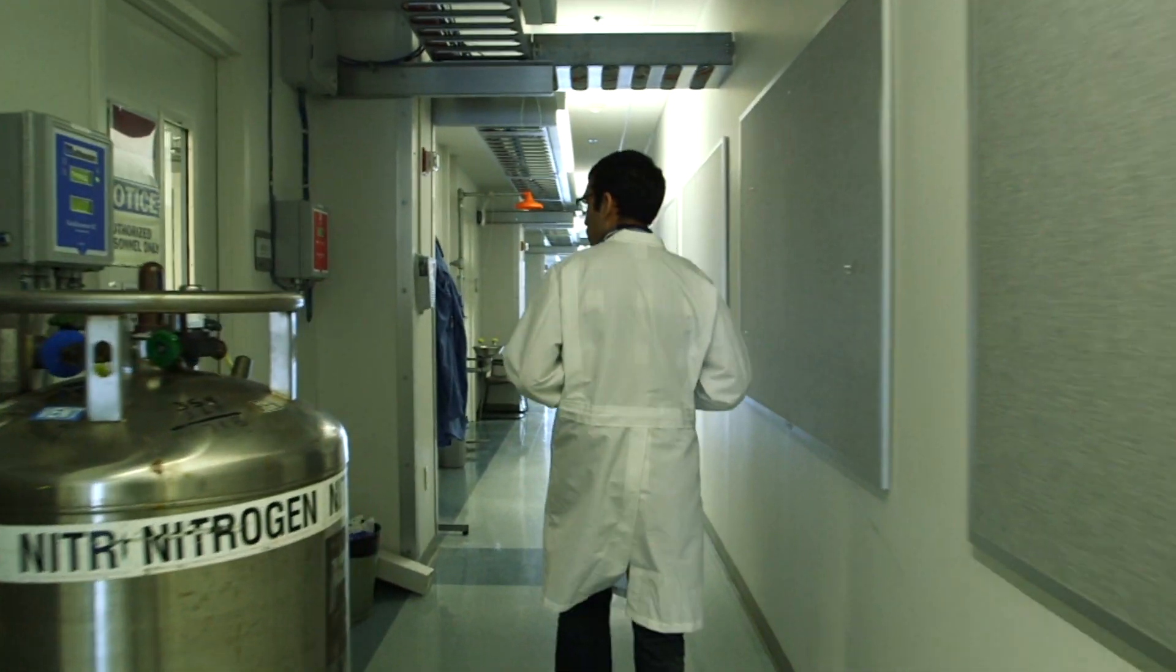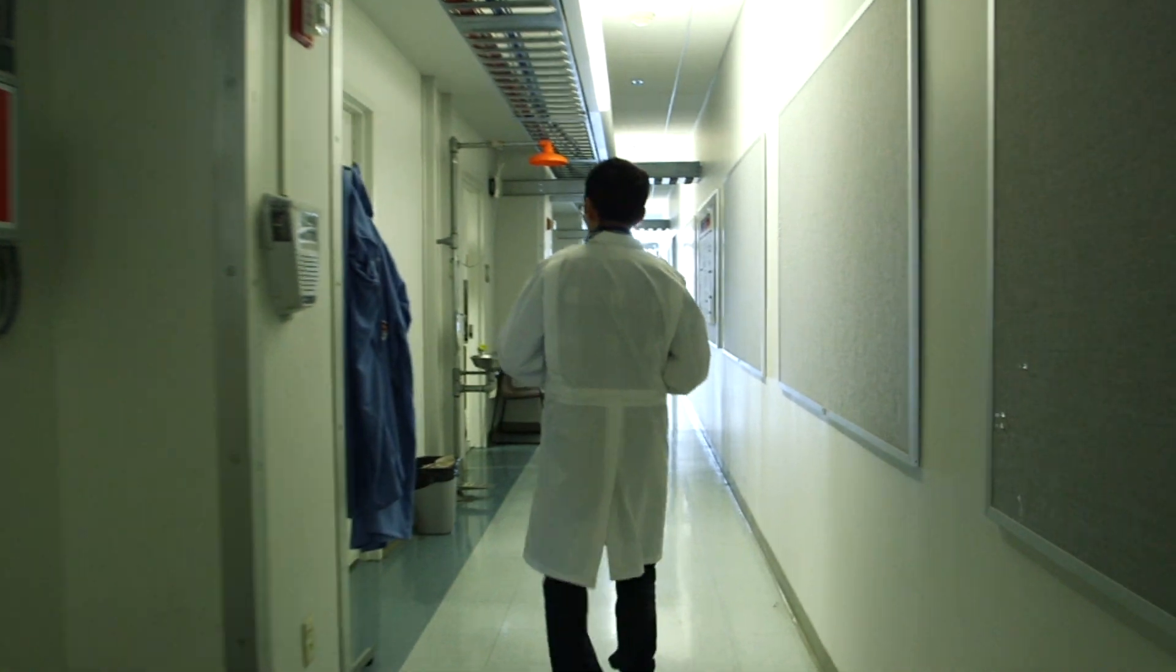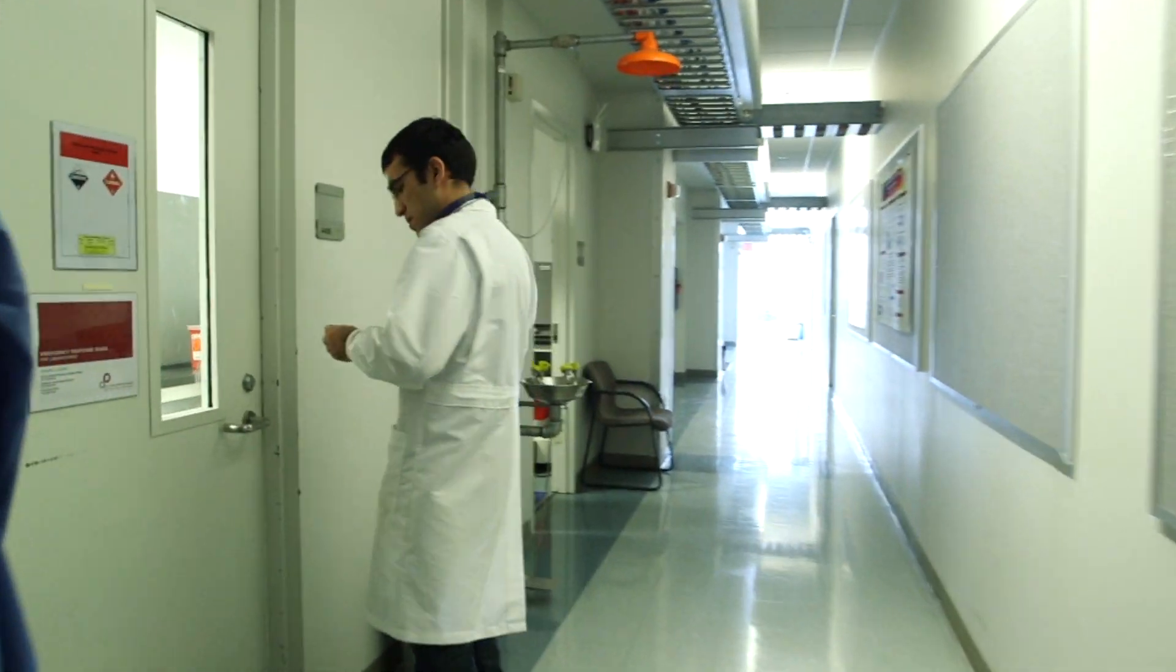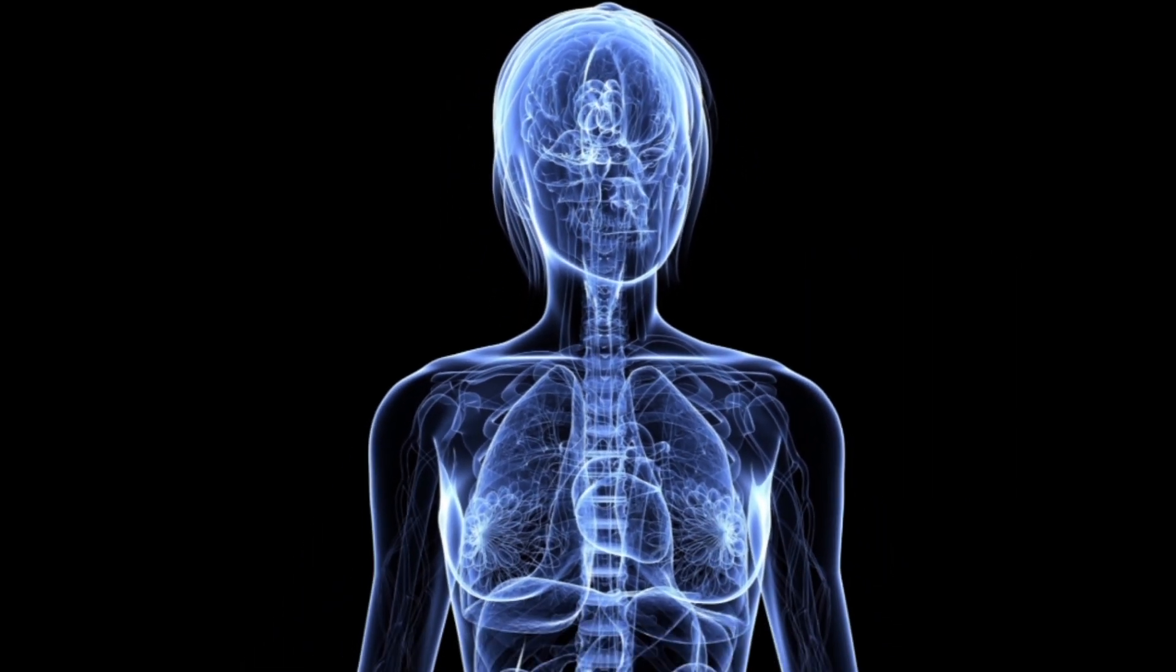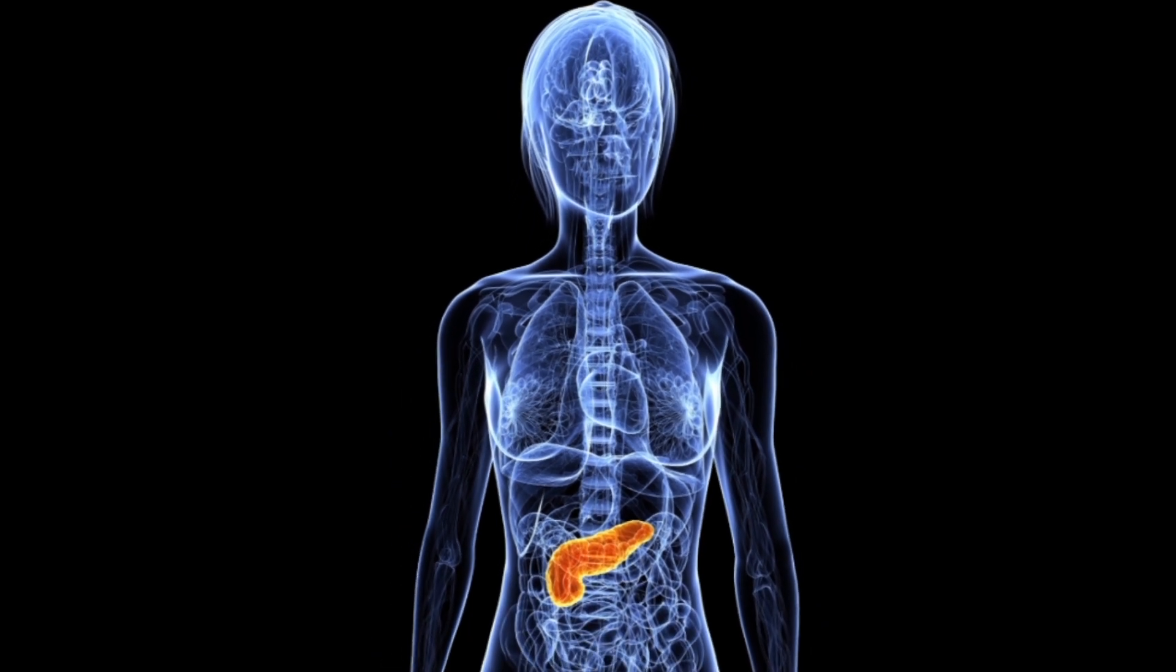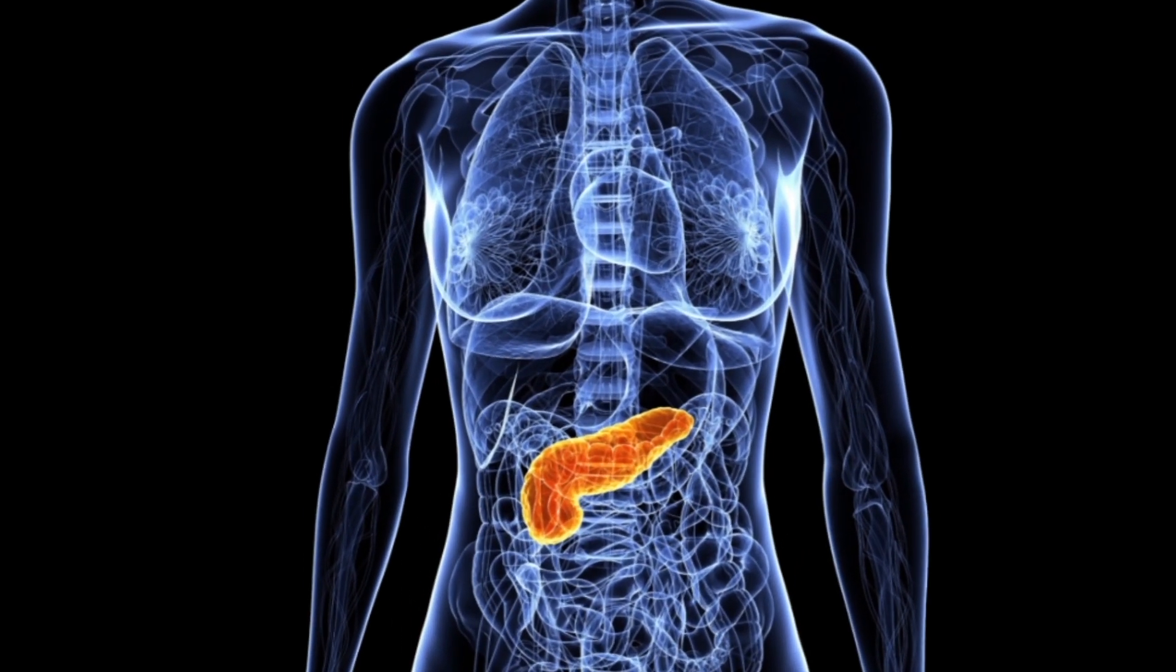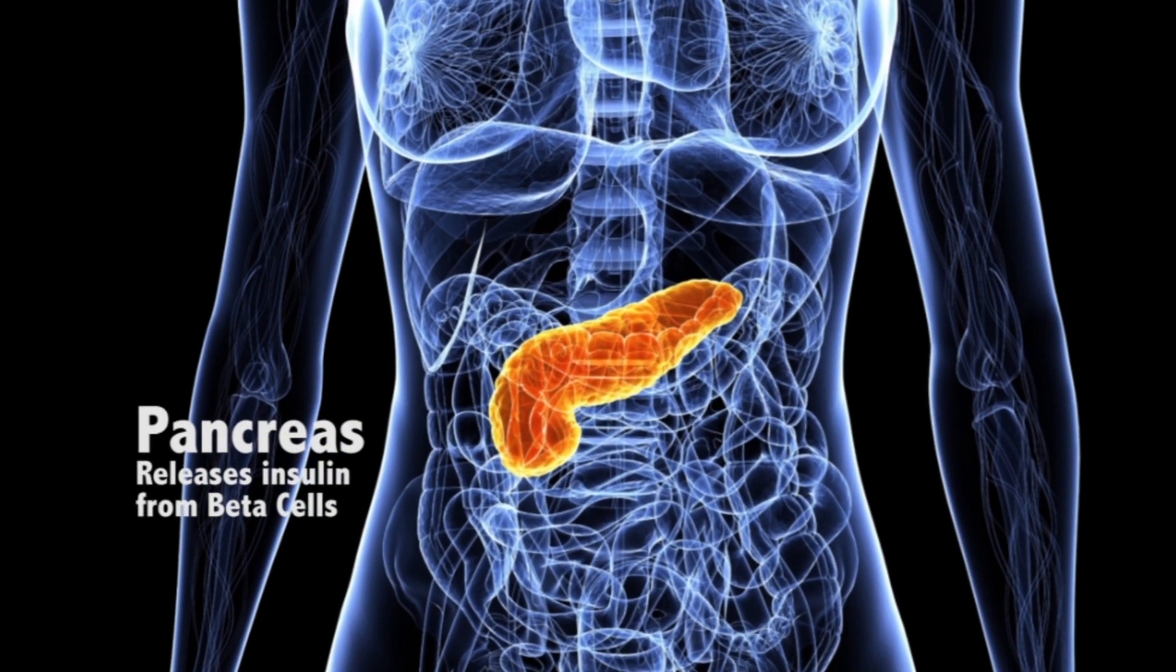Right now I'm more dealing with the pancreas, and in the pancreas there are some cells, especially cells called beta cells, and these beta cells are electrically active. This mechanism will lead to secretion of insulin. Insulin is very important for people who are sick with diabetes, for example.